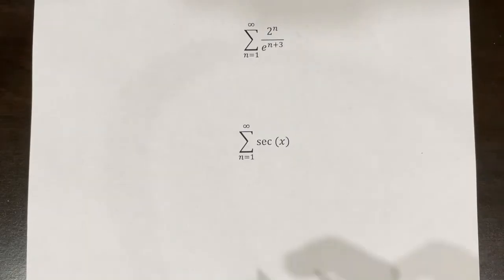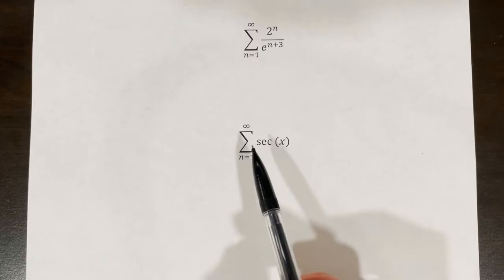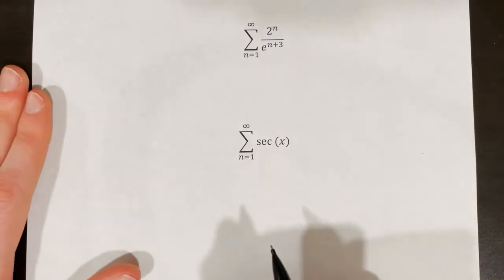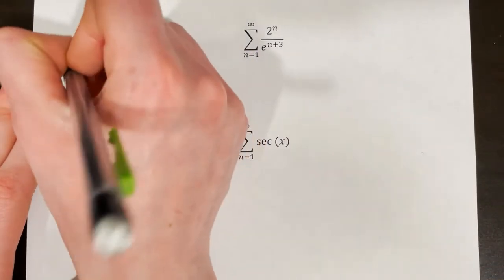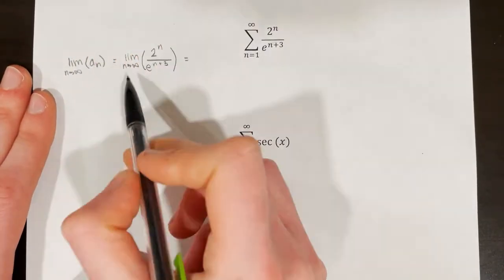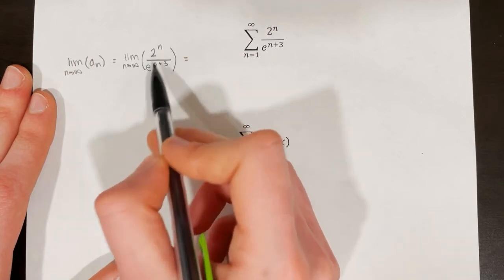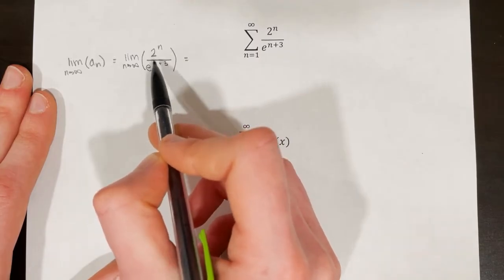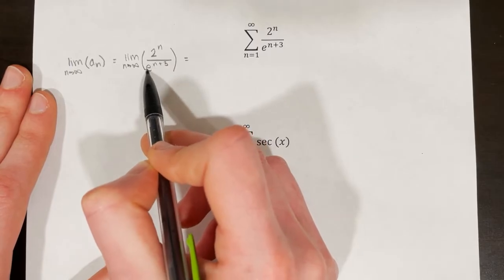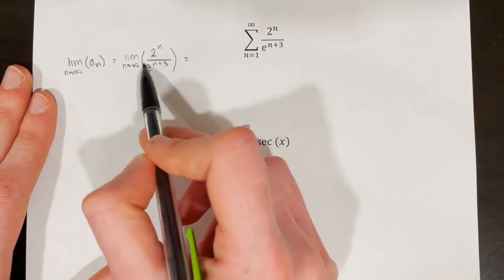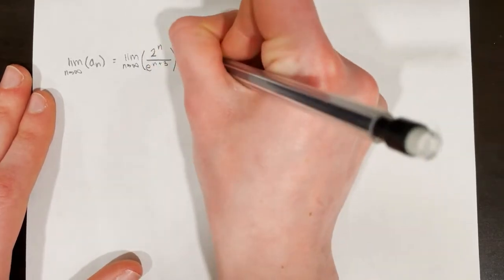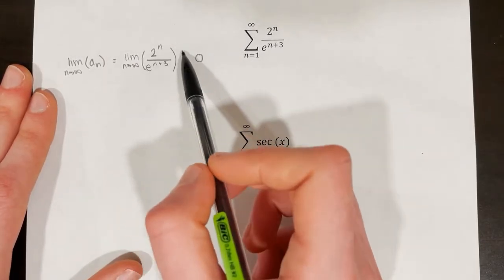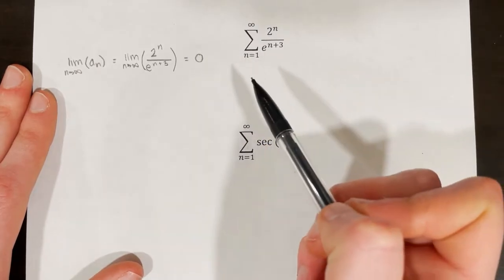For the third example, the series from n equals 1 to infinity of 2 to the power of n over e to the power of n plus 3. Taking the limit as n approaches infinity: since 2 is less than e, 2 to the power of n grows slower than e to the power of n, so the denominator dominates and the limit equals 0. Since the limit equals 0, the nth term test is inconclusive, and we need a different method.